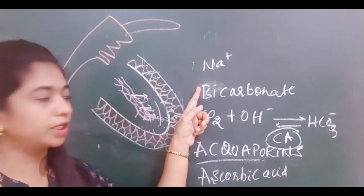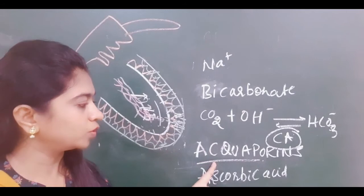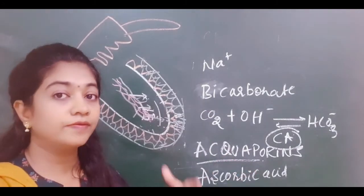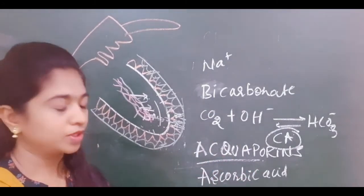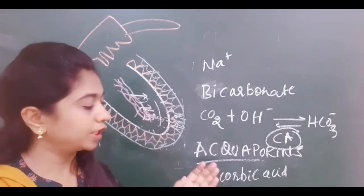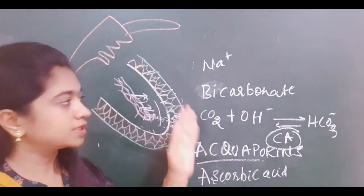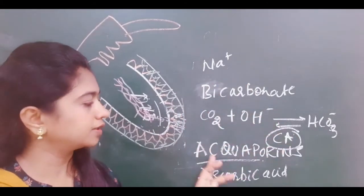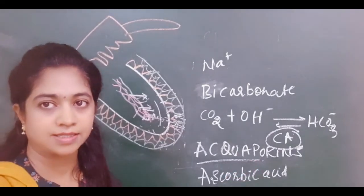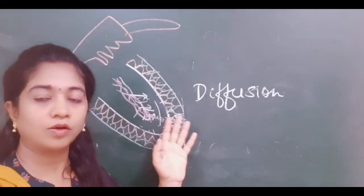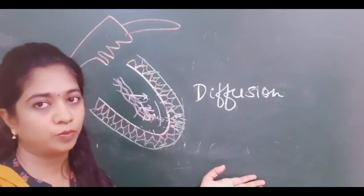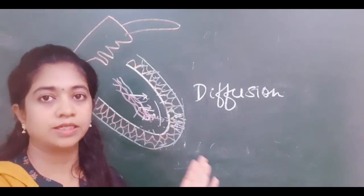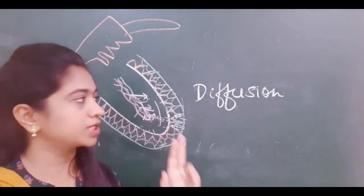So along with sodium and bicarbonate, water enters the posterior chamber. Aquaporins are readily permeable to water. The third component, diffusion, is movement of substances along a pressure gradient into the aqueous humor. In summary, aqueous humor formation involves ultrafiltration, active transport and secretion, and diffusion.